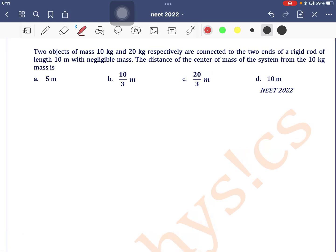Two objects of mass 10 kg and 20 kg respectively are connected to the two ends of a rigid rod of length 10 meters with negligible mass. What is the distance of center of mass from the 10 kg mass?